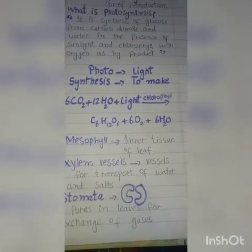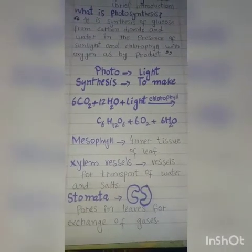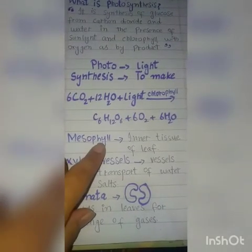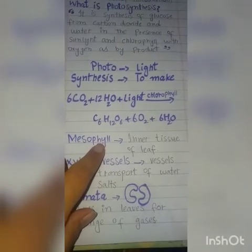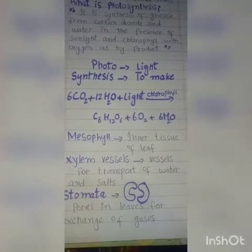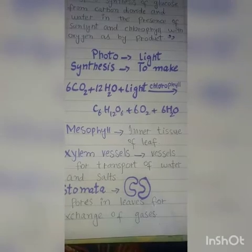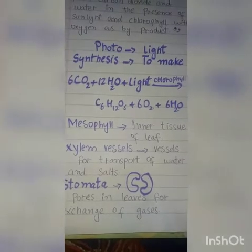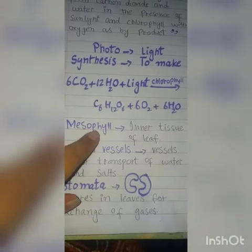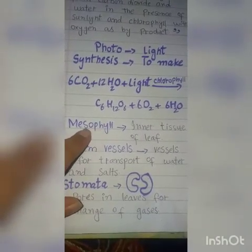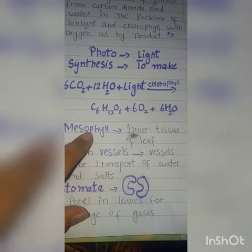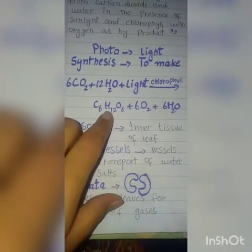Water travels from the roots through the xylem up to the leaves. Mesophyll tissues are present in the leaves. Carbon dioxide diffuses in. Plants take in carbon dioxide and release oxygen. Carbon dioxide is used in the leaves, where chlorophyll and sunlight help convert it into glucose.